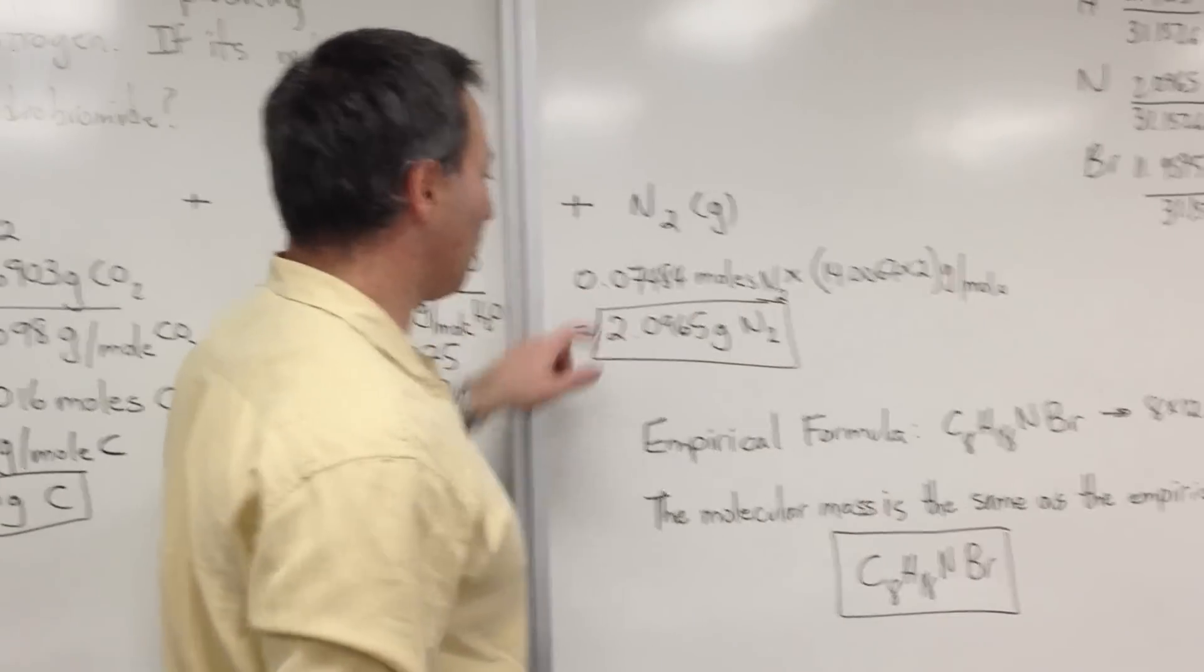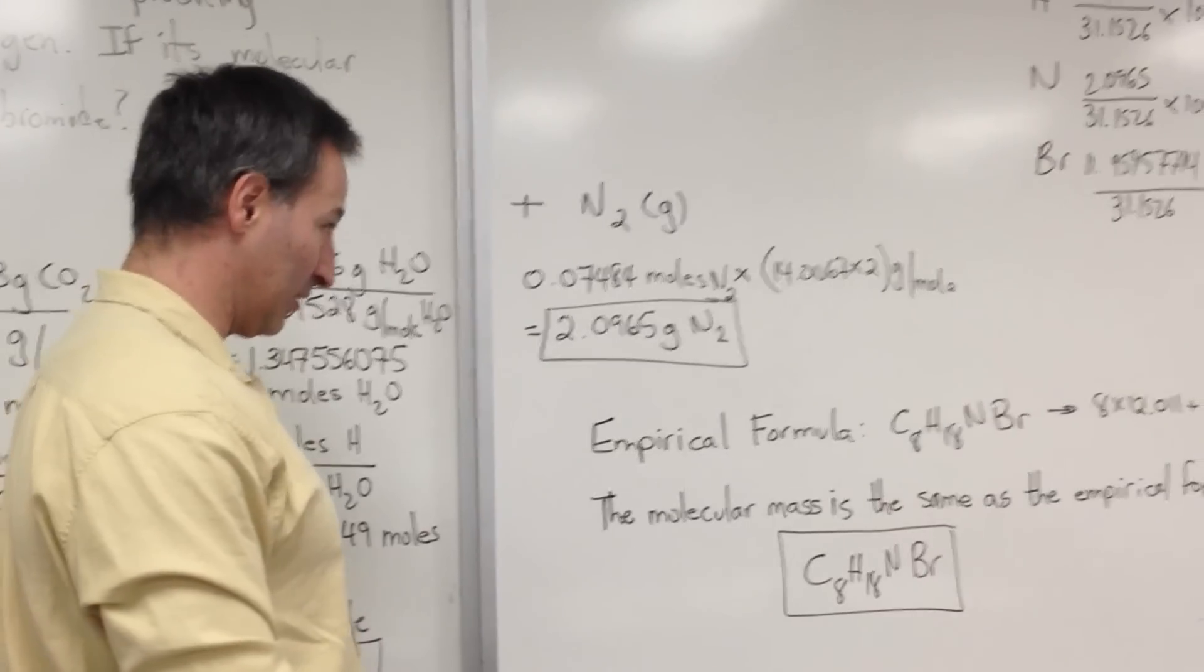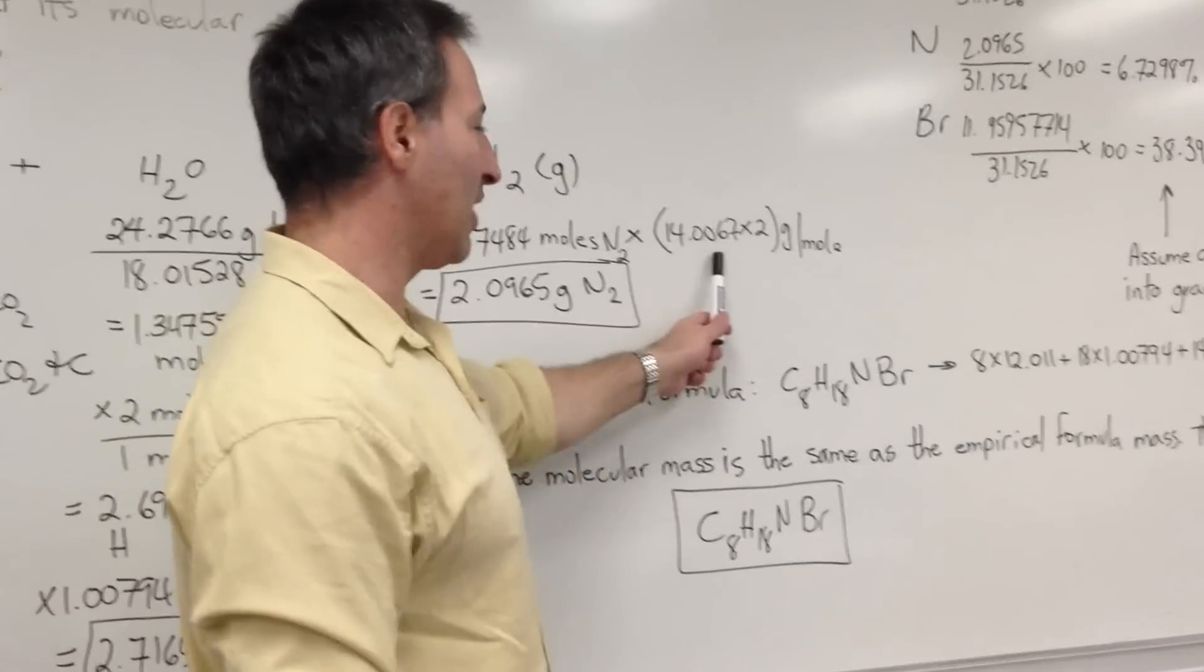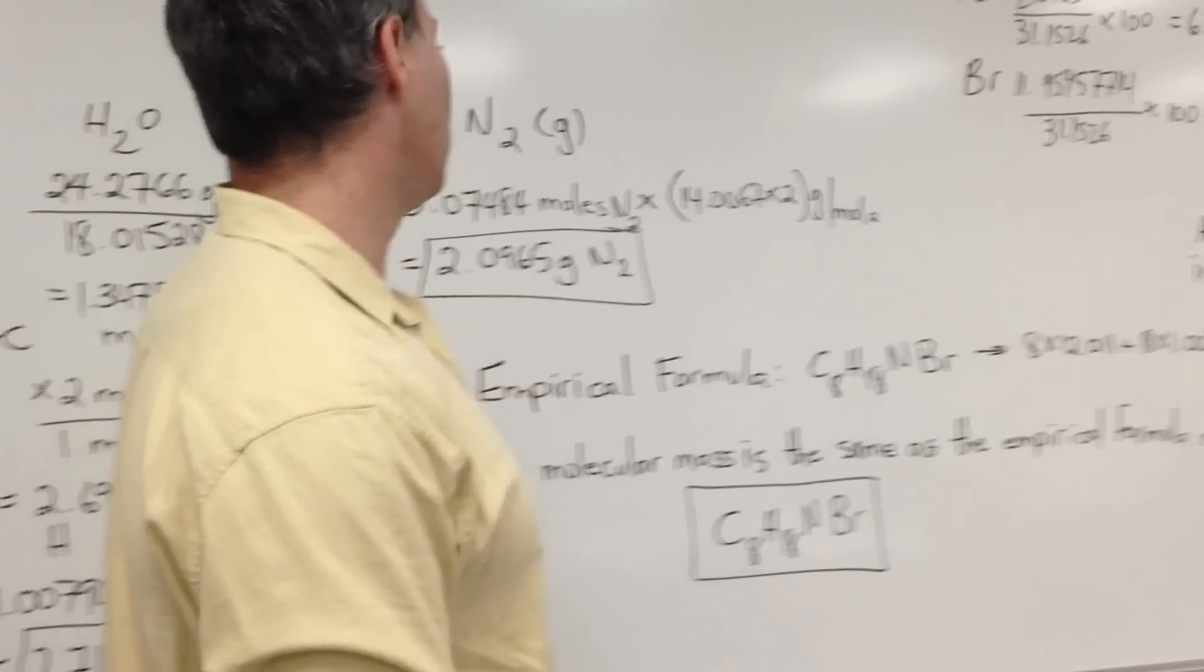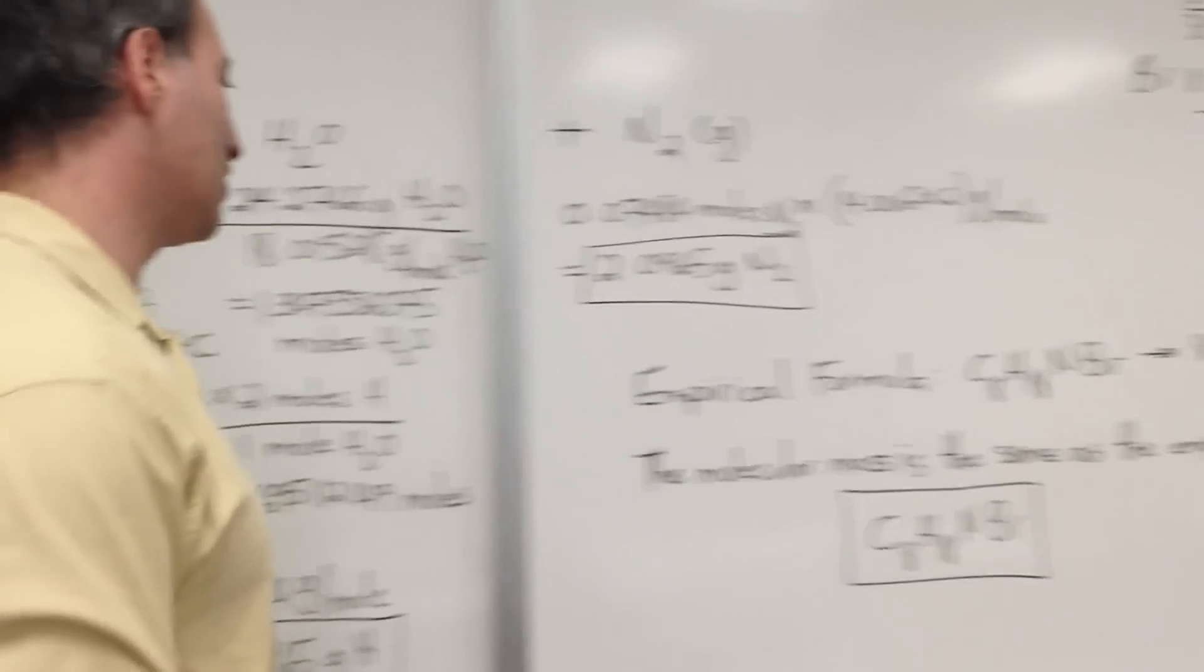We're then simply told that there are 0.07484 moles of nitrogen in the sample left over. Multiply that by the molar mass of nitrogen. Remember, nitrogen is a diatomic gas. So there are 2.0965 grams of nitrogen.